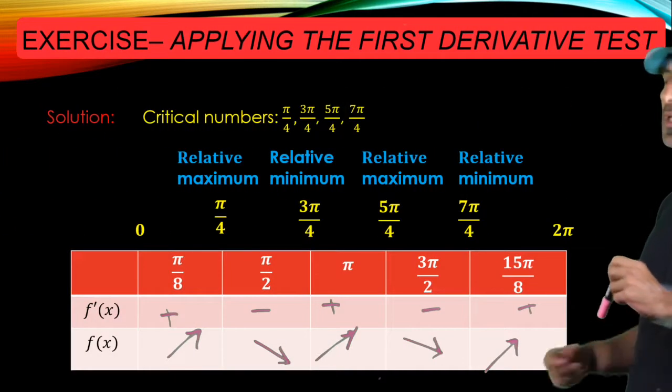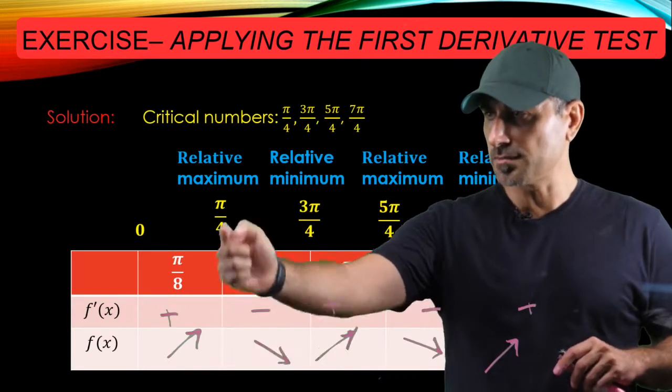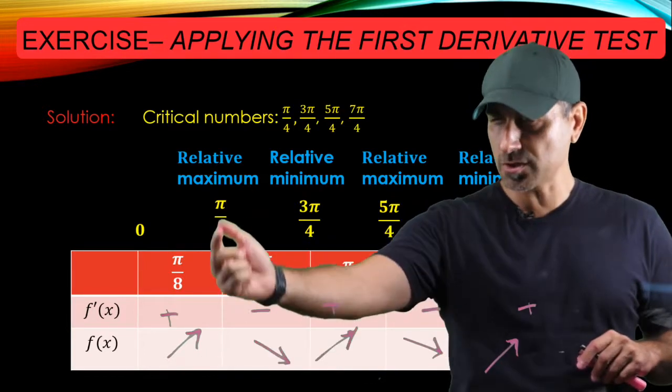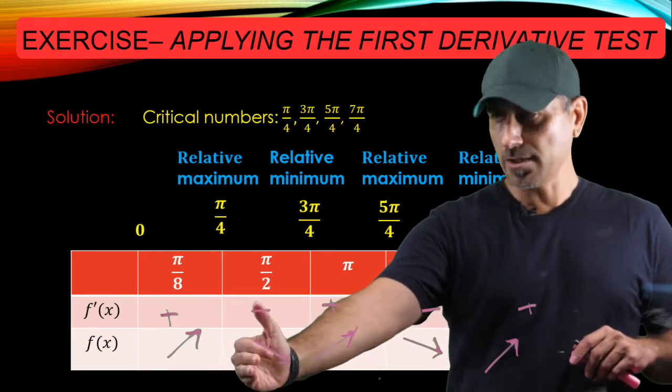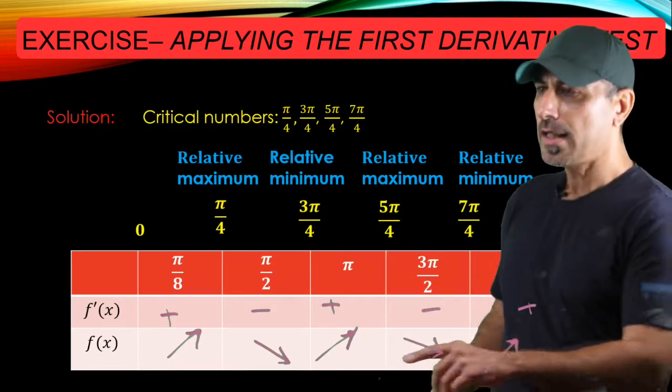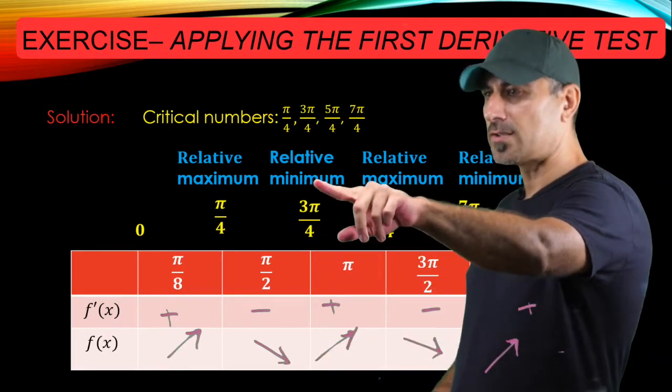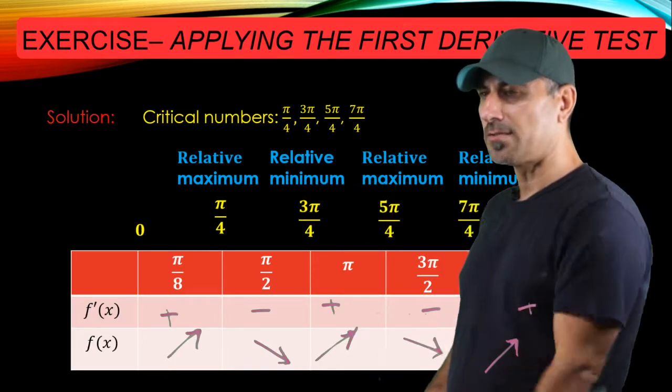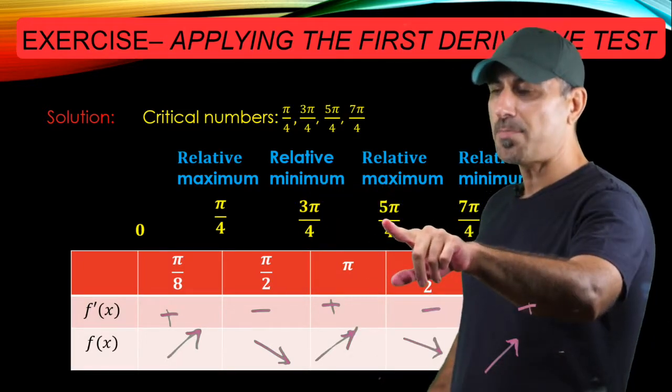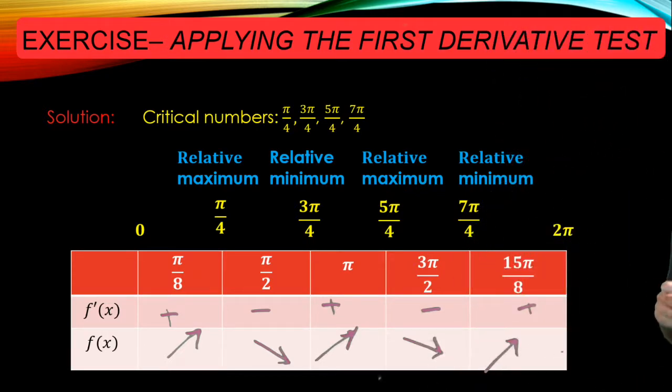So what that means is we have increasing and decreasing behavior - increasing on the left of this junction point, which is the critical number, and decreasing on the other side, so we should probably have a relative maximum here. And decreasing, increasing behavior at this junction point is going to make this point a relative minimum. And 5 pi over 4 is going to be maximum, and 7 pi over 4 is going to be the relative minimum.